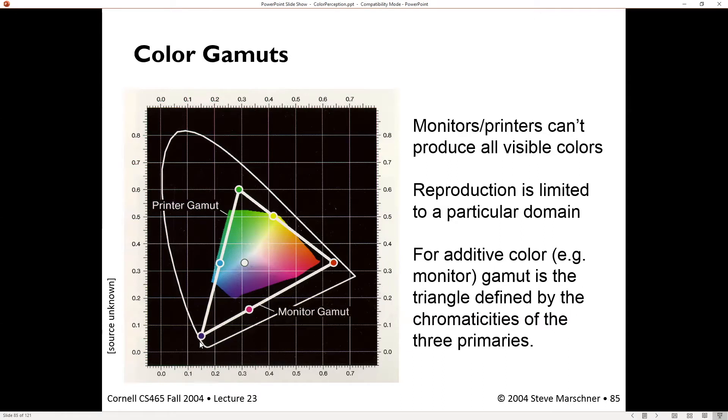So what's a gamut? Gamut means all the colors that you can produce on this device. So if I have three primaries, if I have a red, green, and blue primary, these things are linear. So if they exist at these points in the world of colors, and I haven't explained what this horseshoe thing is, we're going to come to that in a minute, then all the colors my monitor can produce live inside this triangle.